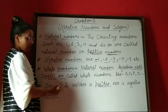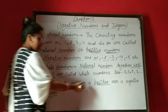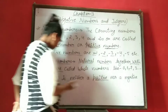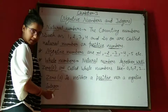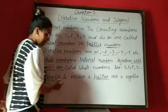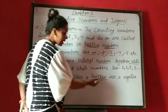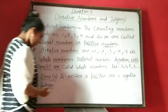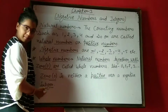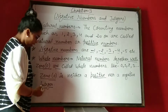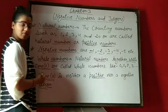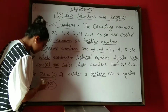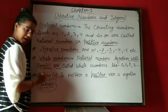Zero is neither a positive nor a negative integer. Means आपका जो zero होता है, वो ना तो positive number होता है और ना ही negative number होता है. और आपके जो positive और negative numbers हैं, वो सब मिलके आपके integers बनाते हैं.